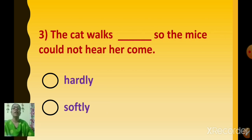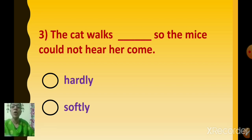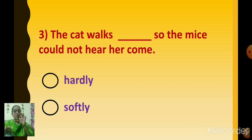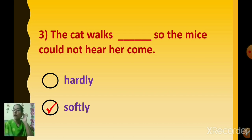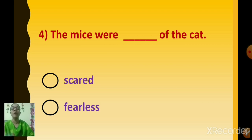Number three: The cat walks dash, so the mice could not hear her come. Hardly or softly? The cat walks softly, so the mice could not hear her come. Click on softly. The cat walks softly — softly means without making any noise.